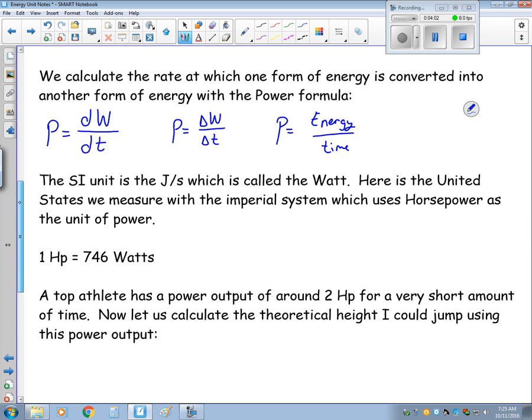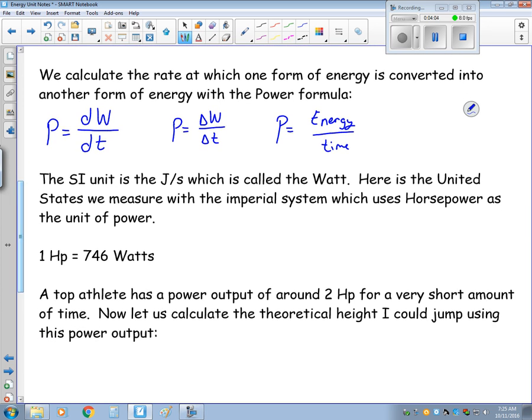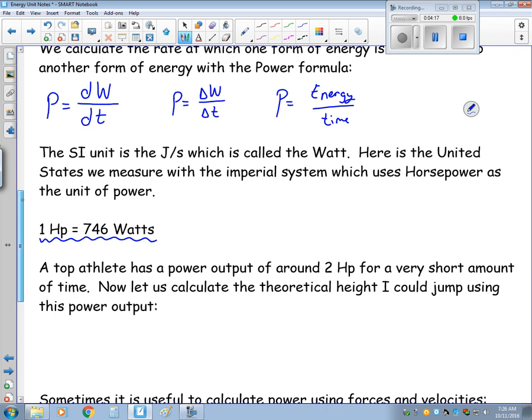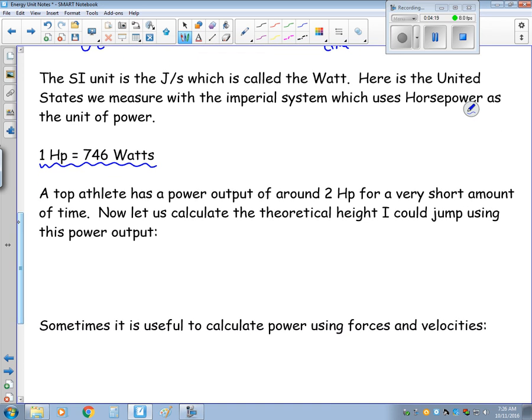In the U.S. where we use the imperial system, we use horsepower. And a rule of thumb is one horsepower is roughly 1,000 watts. It's 746, so roughly one horsepower is right around one kilowatt. A top athlete has a power output of right around two horsepower, and they really are only able to maintain that two horsepower for a short time. So let's calculate my new theoretical height using this power.